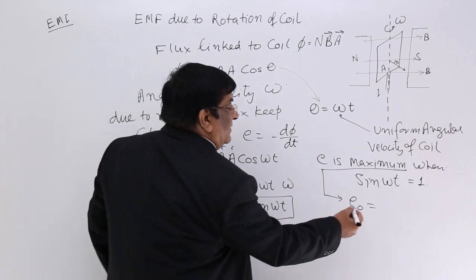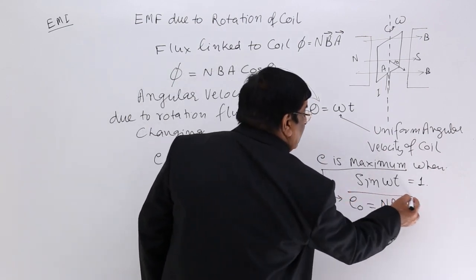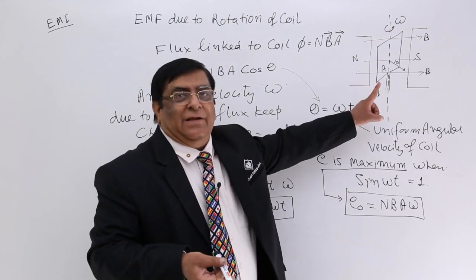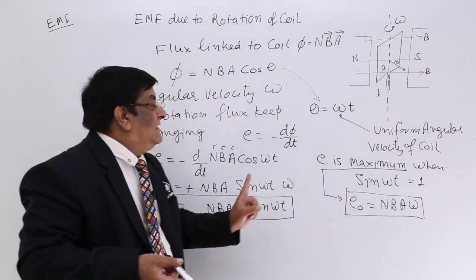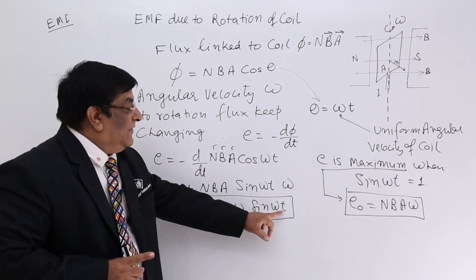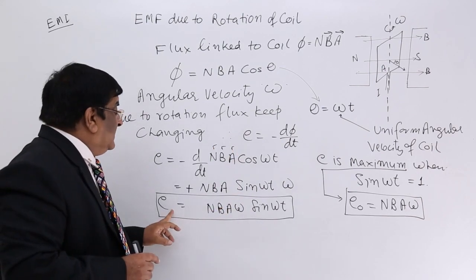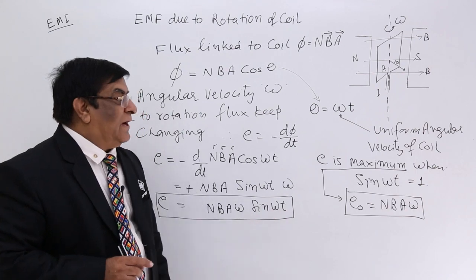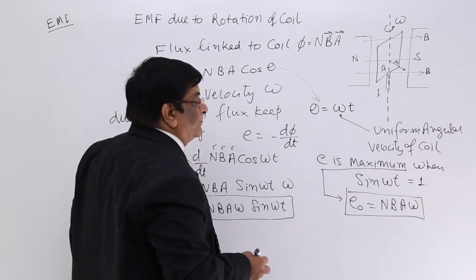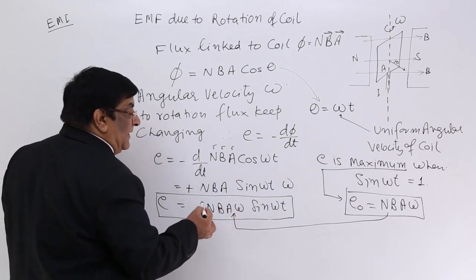How much will that be? N, B, A, omega — and sin omega t has become 1. So E₀ = NBAω. This is the peak value of EMF generated in any coil rotating in a magnetic field. This EMF is not a constant quantity — it keeps on changing with time during the rotation. Two times it is zero, two times it is maximum.